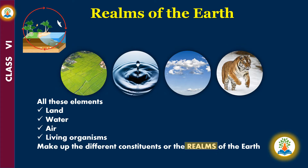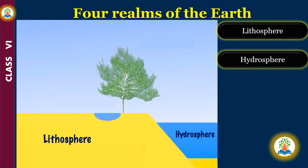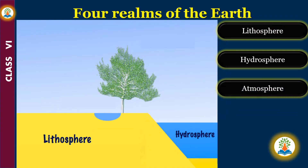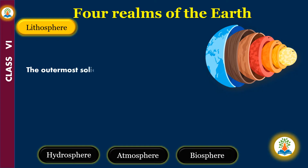All these elements — land, water, air, and living organisms — make up the different constituents, or the realms of the earth. The four realms of the earth are: Lithosphere, which is the solid portion of the earth; Hydrosphere, which includes all water bodies on earth; Atmosphere, the blanket of air around us; and Biosphere, the realm where life exists.